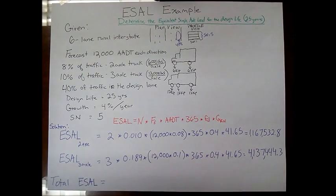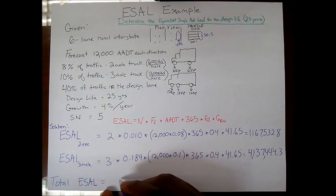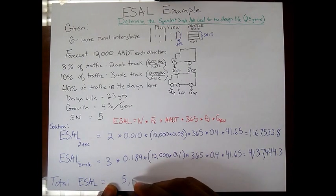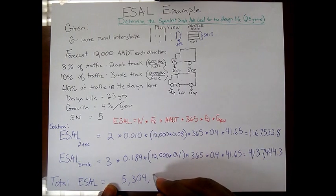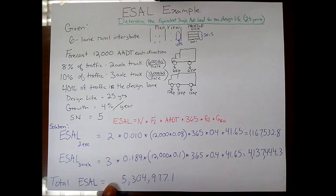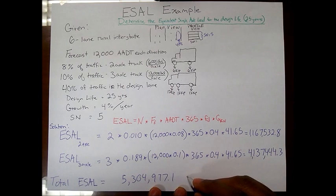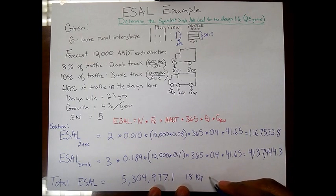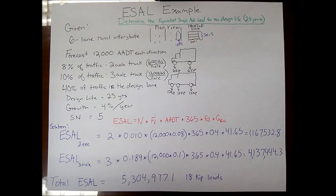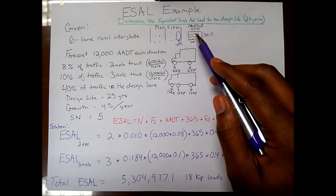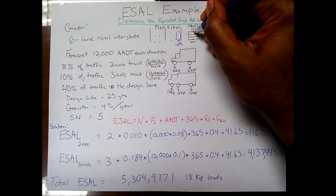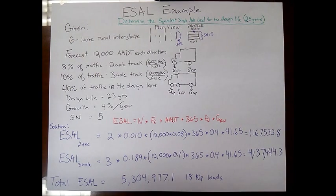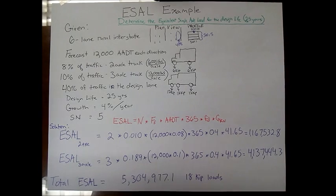All right, so when I add these two up I end up getting a total ESAL of 5,304,977.1. And that is the number of 18 kip loads that are being placed onto the road for the entire design life of 25 years.